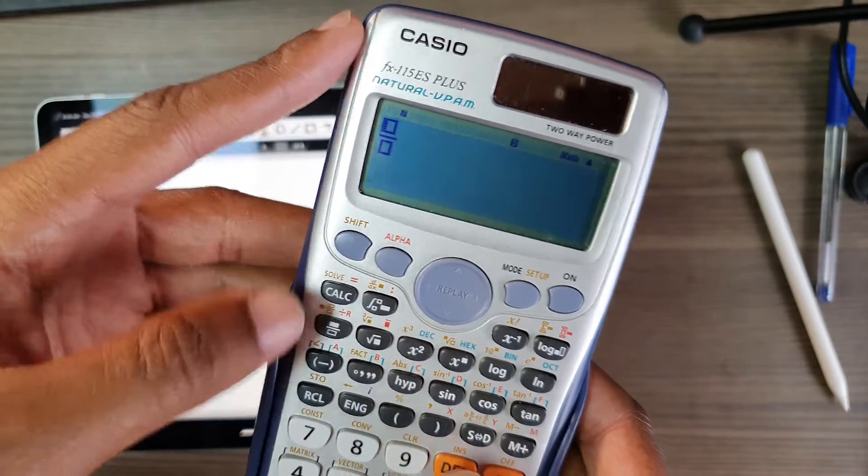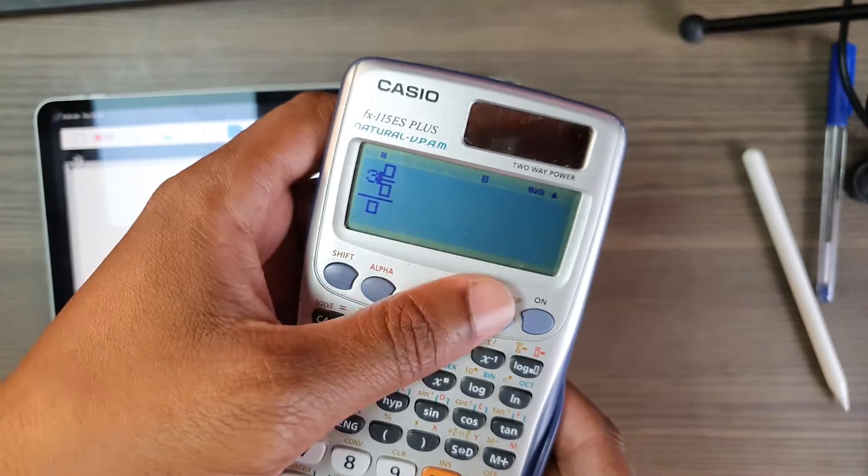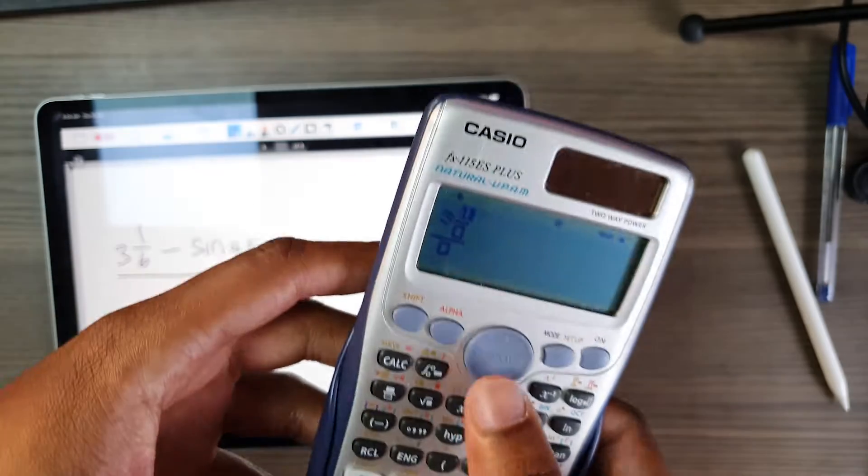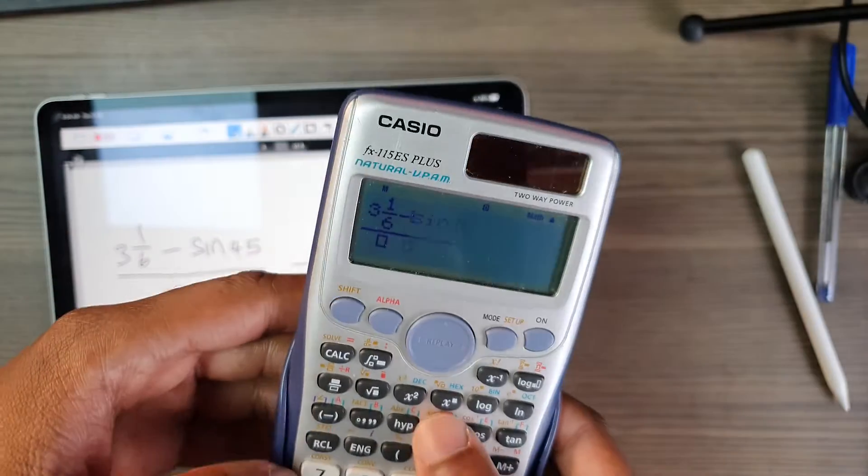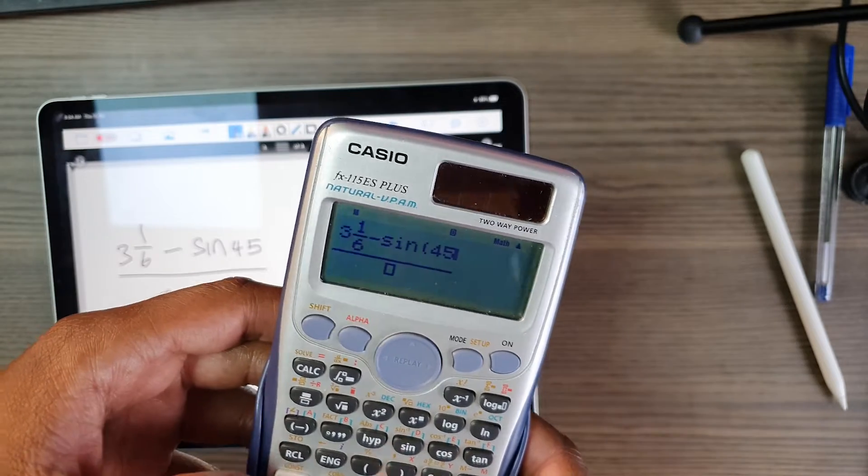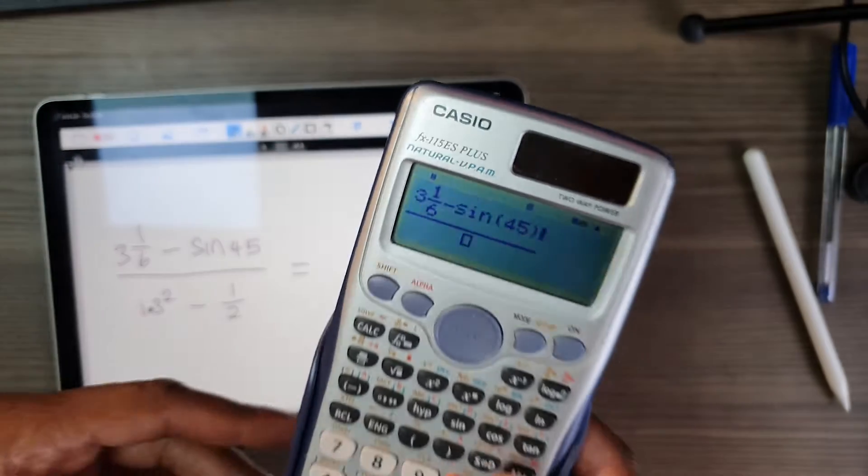I'm going to give them the mixed number now and put my three and one sixth minus sine 45. Make sure my calculator's in degrees—it is—and over...